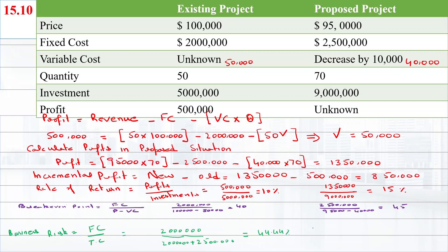For the proposed product, fixed cost is $2,500,000 divided by total cost of $2,500,000 plus variable cost of $2,800,000, and the business risk is 47.17%. As discussed, if a firm has more fixed assets, its break-even point will be achieved at a higher number of units and it will have higher business risk. The proposed project has higher fixed cost, so its break-even point is achieved at a higher number of units and it has higher business risk.